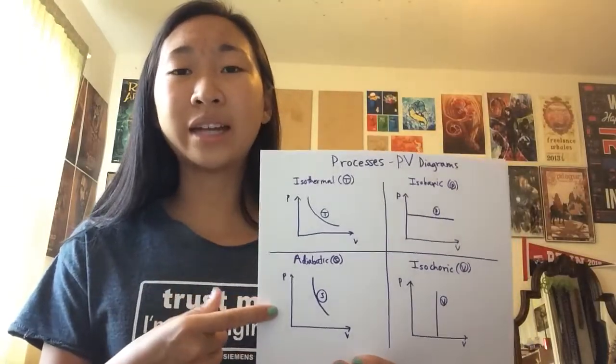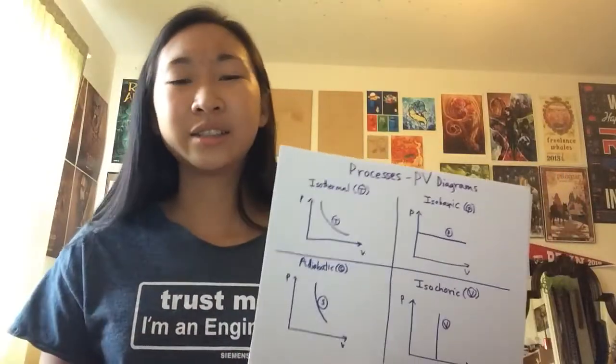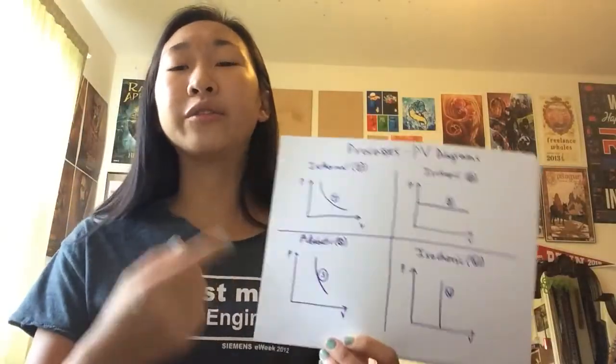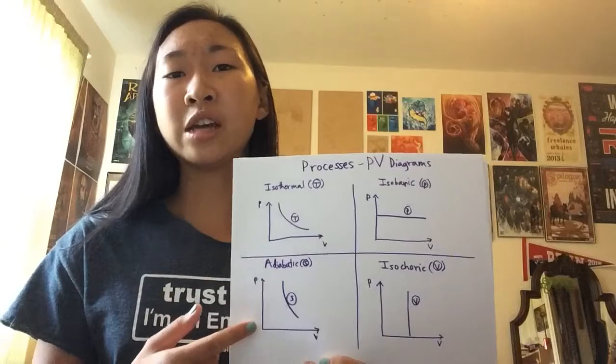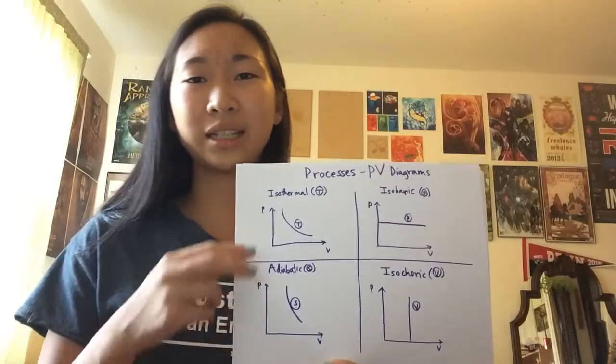And you have the adiabatic, or constant entropy, isentropic, constant S. All different ways to say no heat exchange. Also shown as an inverse relationship between P and V, but steeper than the isothermal line. Yes, that's the adiabatic one.